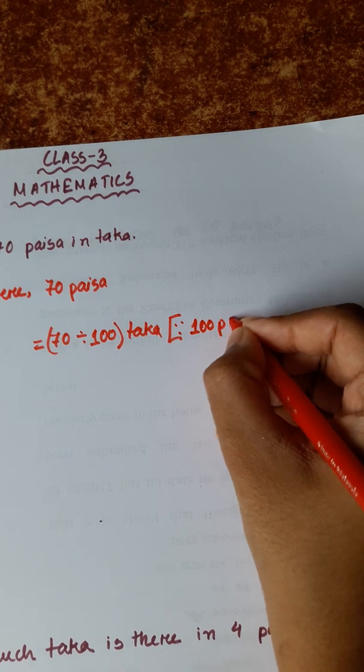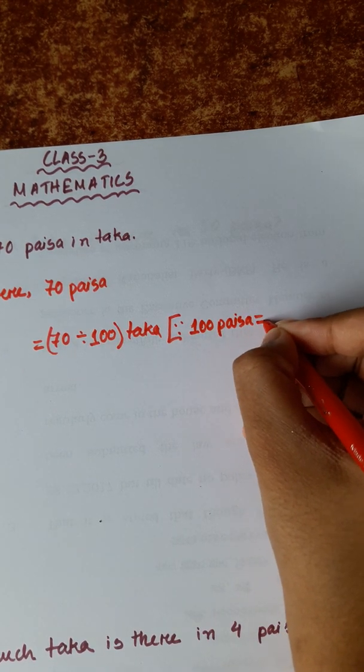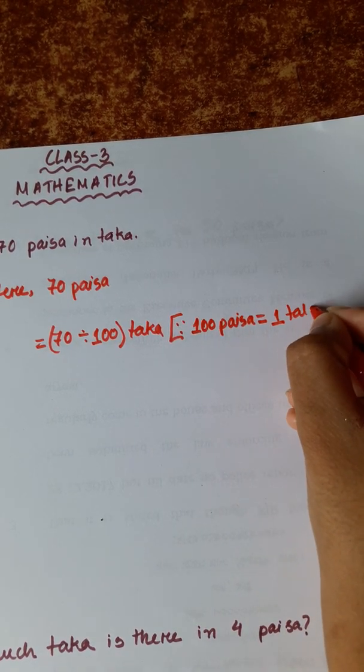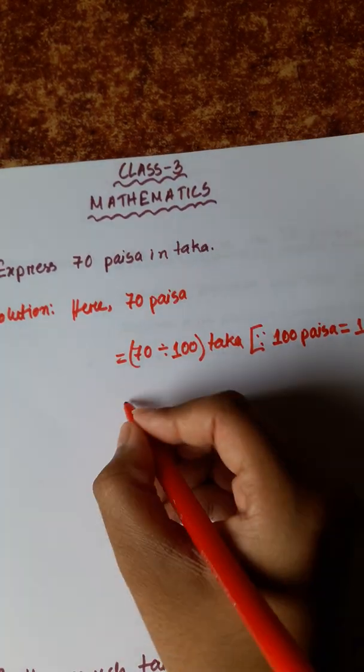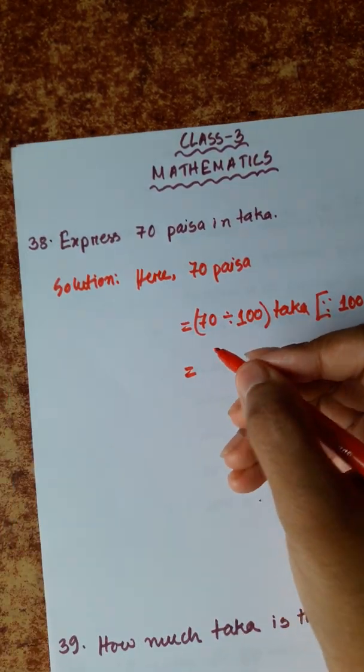100 Paisa is equal to 1 Taka. So now, let's divide it.